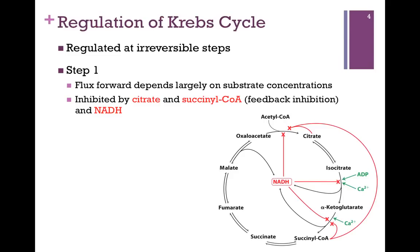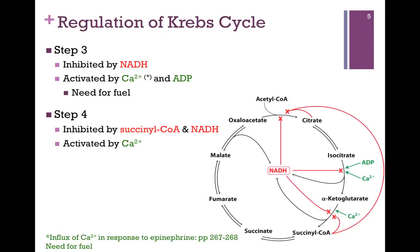Step one is also inhibited by NADH — one of the main products of the pathway. We produce three molecules of NADH for every turn of the pathway. If we're not re-oxidizing those components and using those electrons, then we need to shut down the pathway until we can do so. Steps three and four are also inhibited by NADH. Step four is also feedback inhibited by succinyl-CoA — it shuts down its own synthesis if it's not used in subsequent steps and its concentration builds within the cell.